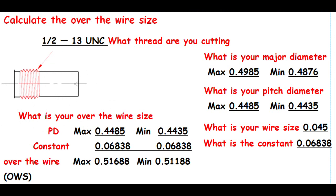Now that we've acquired our list of information, let's put it into a nice document form. To the right we have our list of information. To the lower left, we add the pitch diameter and the constant, which will give you the OWS — over the wire size. Once you have your over the wire size, you can check to see if it fits within the specifications of what you're trying to achieve — basically your class of fit: class one, class two, or class three.